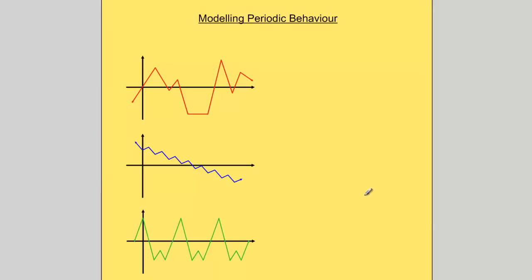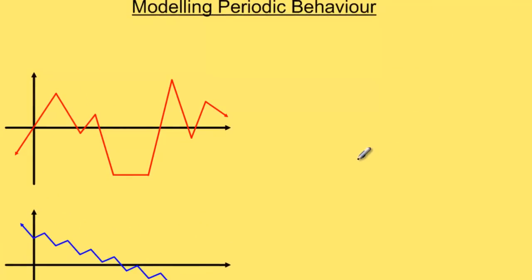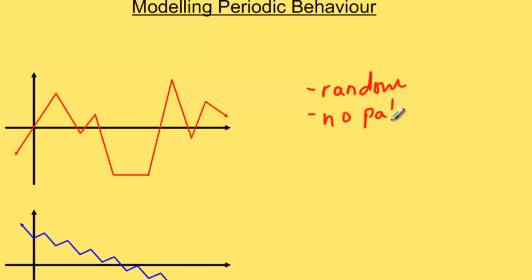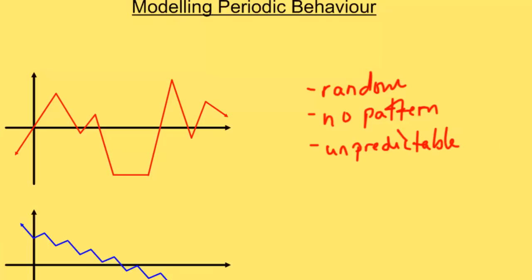Here are three different functions, and I want you to see if you can figure out what is similar between them and what are some things that are different. If we look at the very first one, the one in red here, I would say that this function is sort of random. It's hard to predict where it's going to go next. There's no pattern here. It's unpredictable. I can't really tell what the highest point would be, because I don't know if these arrows are going to continue and the pattern might continue even higher a bit later on or even previous to where we see here. I don't know how low it's going to go. I can't even tell you what pattern exists or if this even repeats itself.